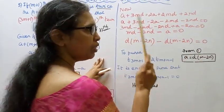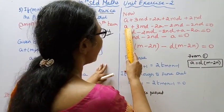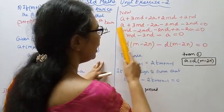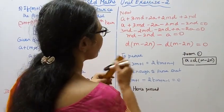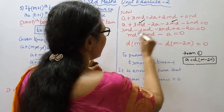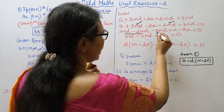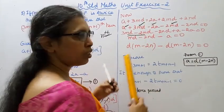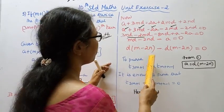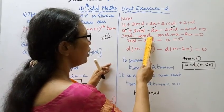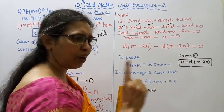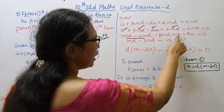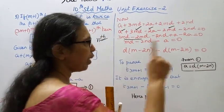We need to show A plus 3MD minus 2A minus 2MD minus 2ND equal to 0. Simplifying: 3MD minus 2MD minus 2ND plus A minus 2A. Combining like terms: MD minus 2ND minus A equals 0, which is D bracket M minus 2N minus A equal to 0.